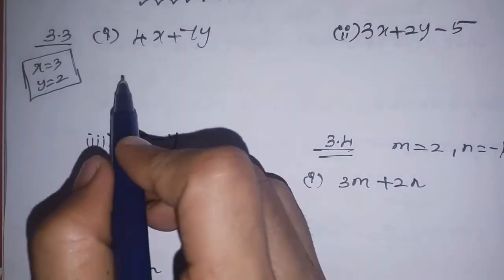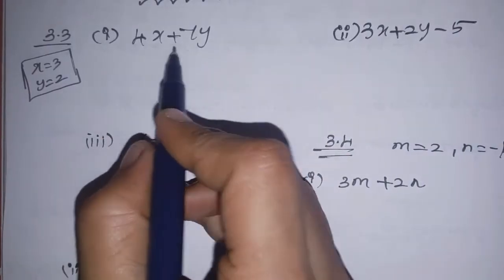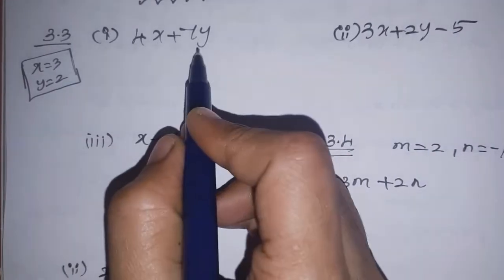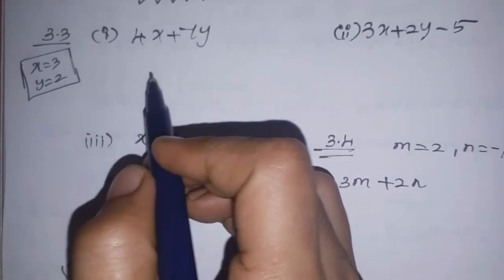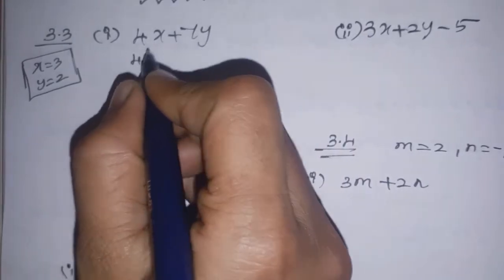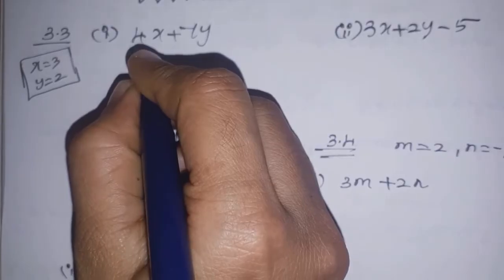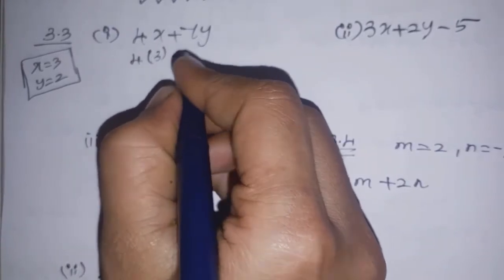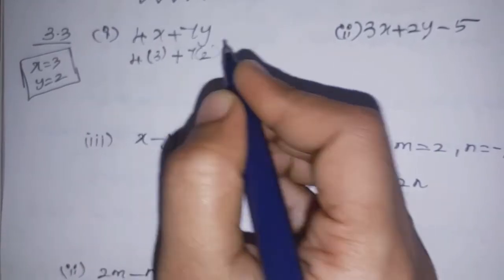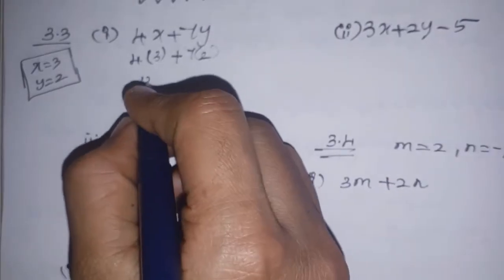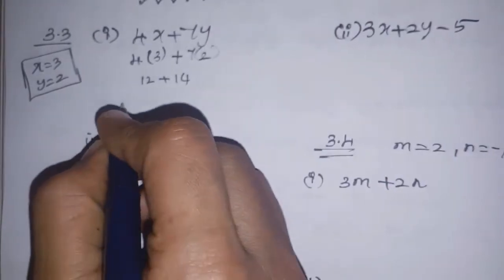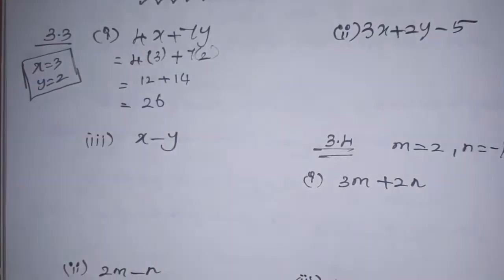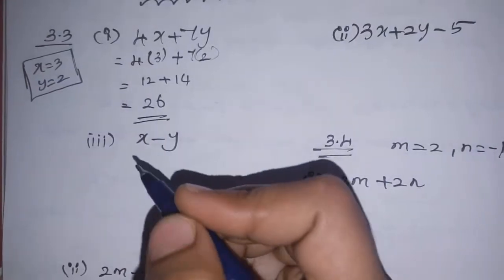For 4x plus 7y: substitute x equals 3 and y equals 2. So 4 into 3 is 12, and 7 into 2 is 14. Therefore 12 plus 14 equals 26. The answer for the first subdivision is 26.